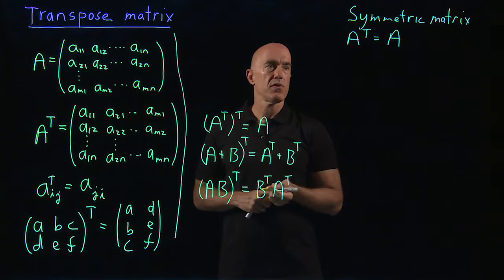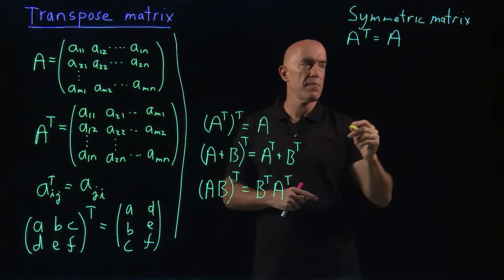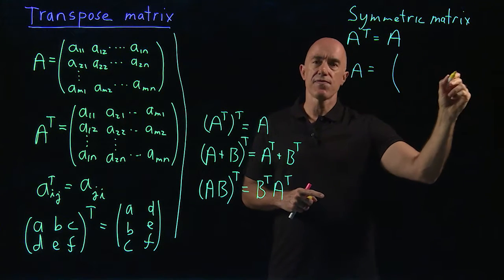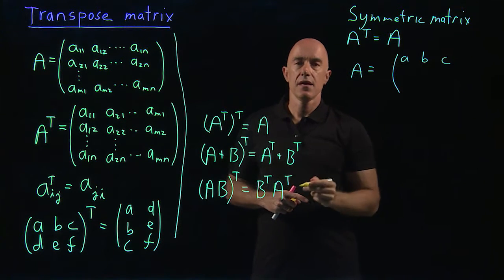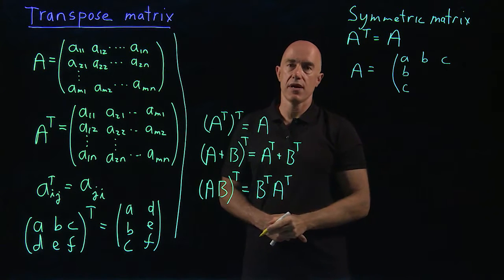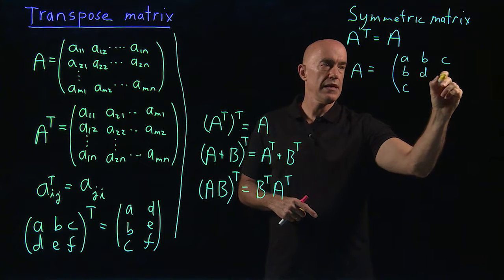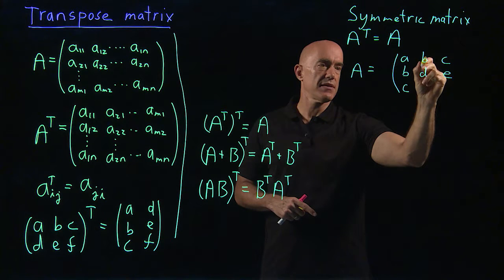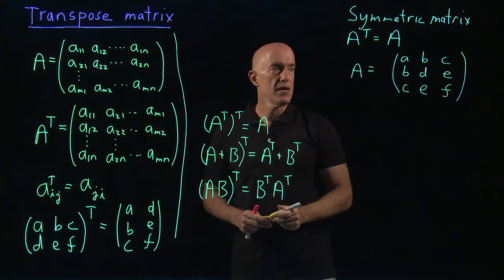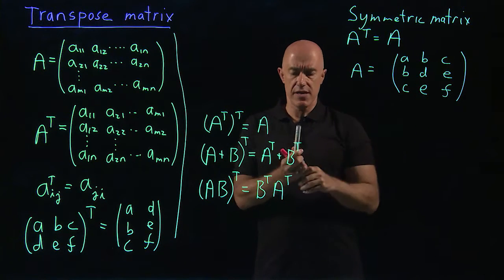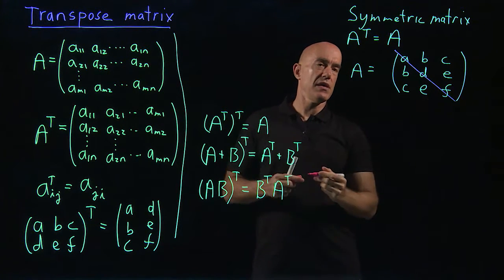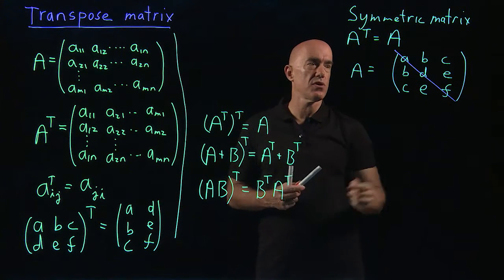The matrix is equal to its own transpose. For a three-by-three example — if the first row is A, B, C, then when you take the transpose the first row becomes the first column, so the first column also has to be A, B, C. The second row B, D, E means the second column has to be B, D, E, and the remaining diagonal element is F. So this is a symmetric matrix — you see the symmetry: B, B; C, C; E, E. It's symmetric about the diagonal.